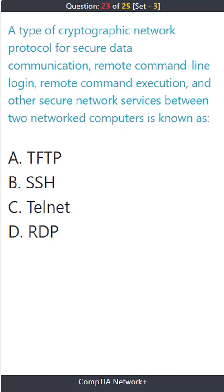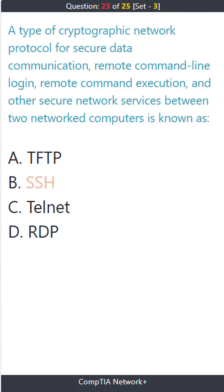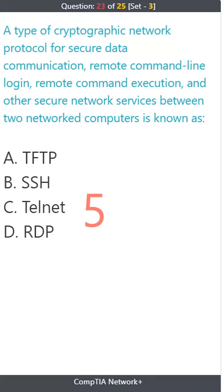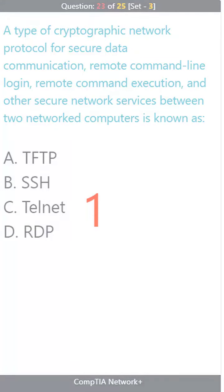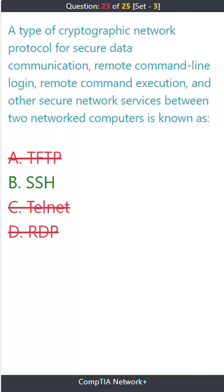Question 23. A type of cryptographic network protocol for secure data communication, remote command line login, remote command execution, and other secure network services between two networked computers is known as: A. TFTP. B. SSH. C. Telnet. D. RDP. The correct answer is B. SSH.